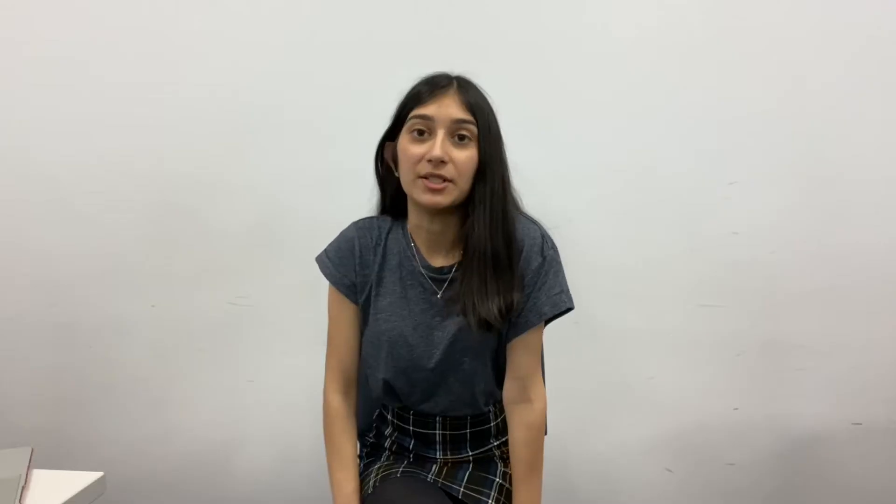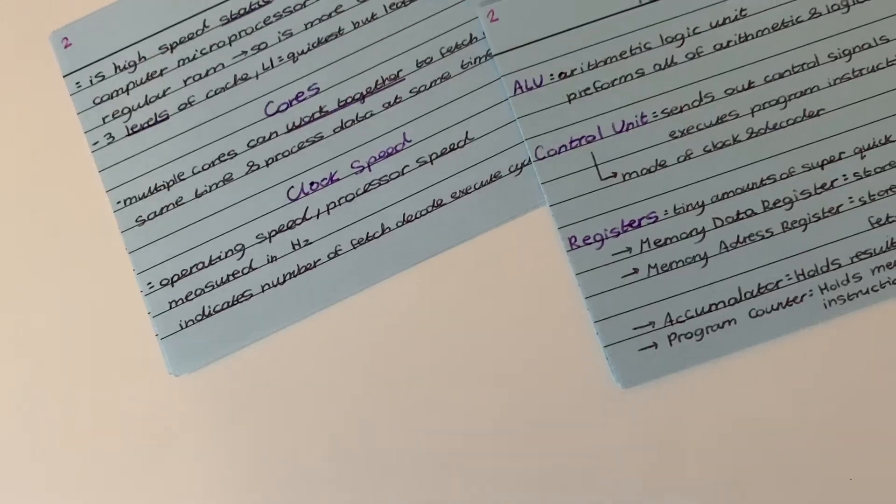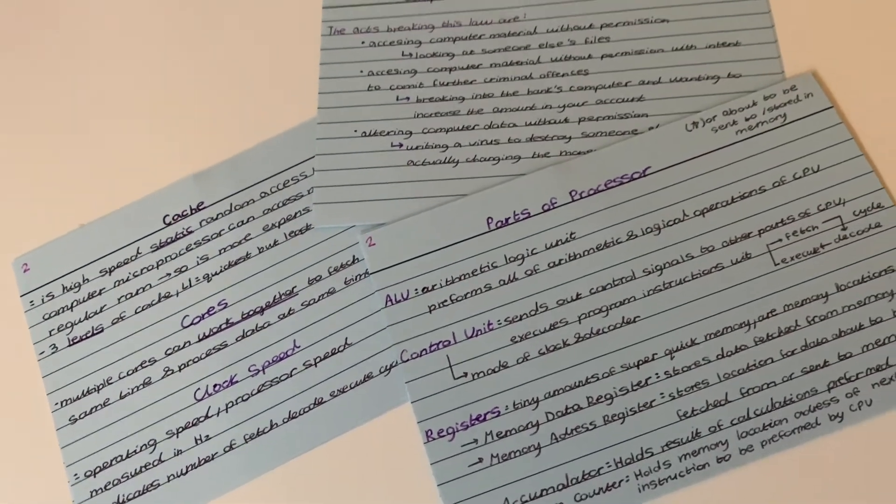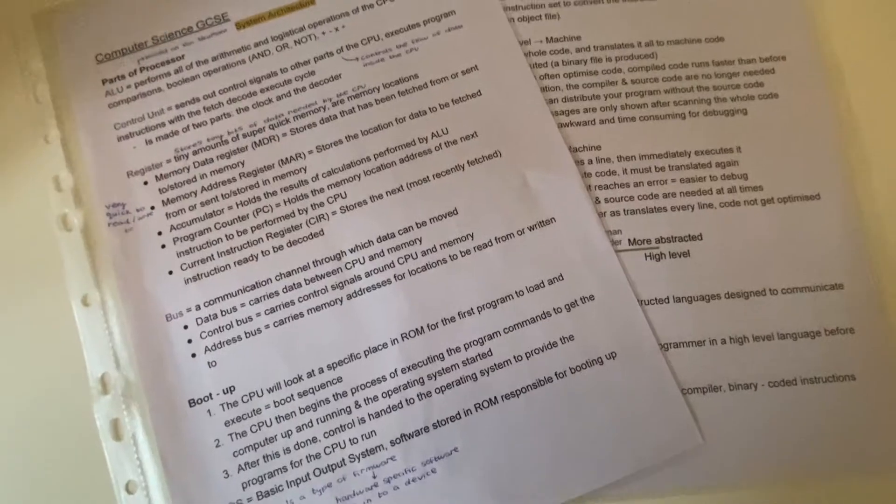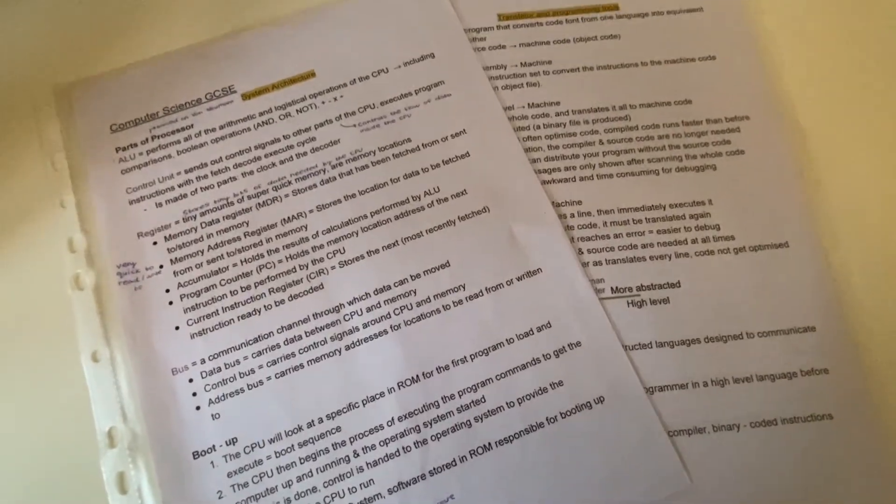The next tip is to make your revision resources as you go. Whether this be in the form of flashcards, revision notes, or mind maps, try and regularly condense your class notes and textbooks into a set of revision notes to revise from. Try and use bullet points, questions, and colours in your flashcards to make them more memorable, so they'll be more useful to you because you'll remember the things on them a lot easier.